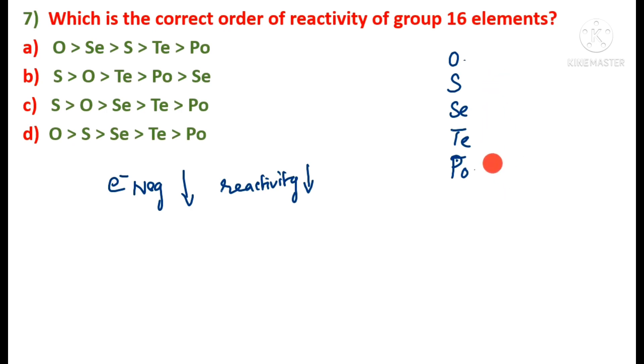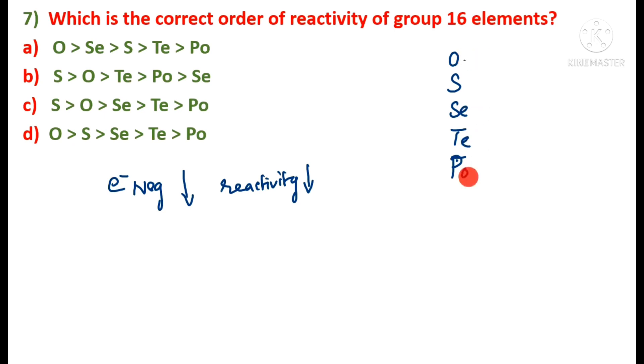Since electronegativity decreases as we move down the group, reactivity also decreases. The correct decreasing reactivity order is oxygen > sulfur > selenium > tellurium > polonium. Option D is correct.